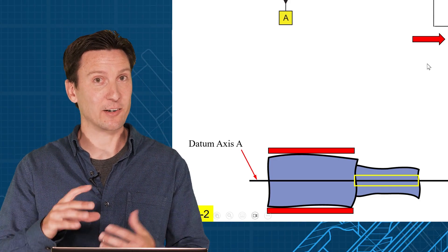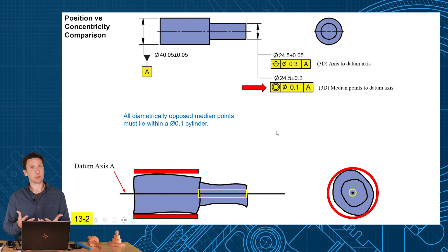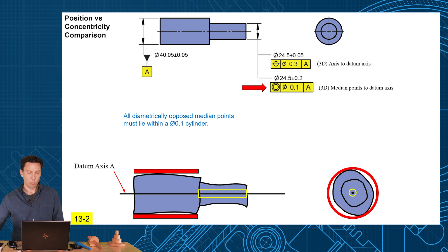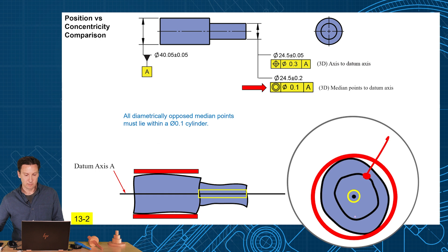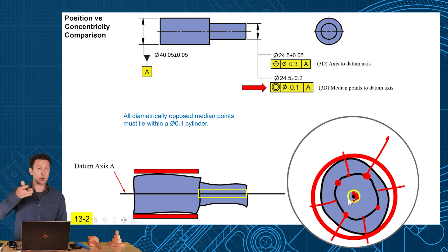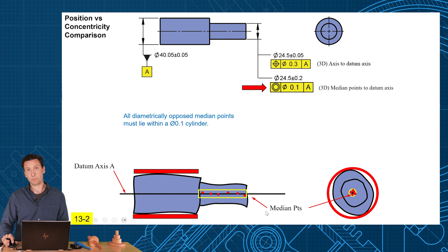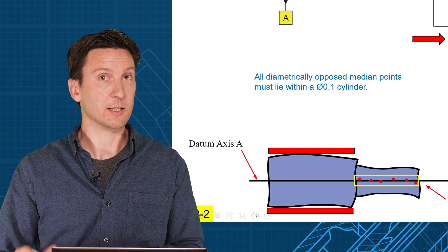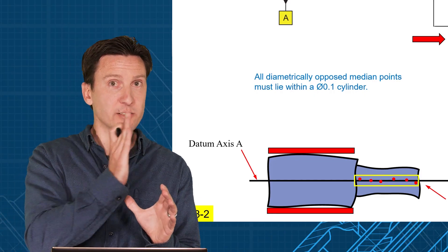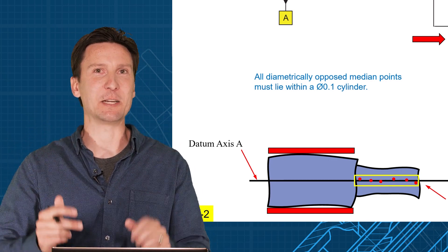Concentricity in the 2009 standard had a different meaning. It means you want the median points of the feature to lie within the tolerance zone. Same shape tolerance zone — you get that cylinder of 0.1 — but instead, all diametrically opposed median points must lie within the 0.1 cylinder. You go across your feature and look at the opposing median point: from here to here, where's the midpoint? About right there. You do that for an infinite number of cross sections, an infinite number of opposing median points, and you get what they call a cloud of median points. Those median points have to lie within your cylindrical tolerance zone.